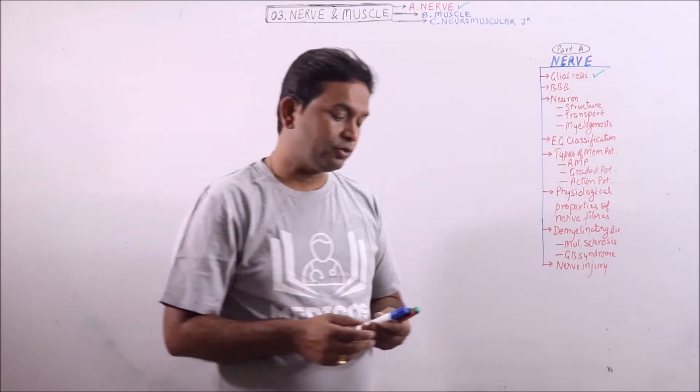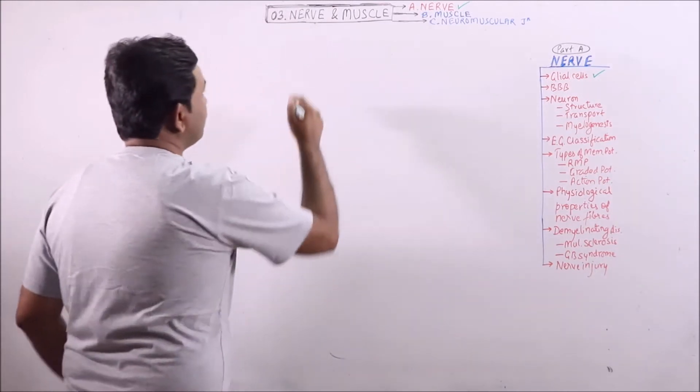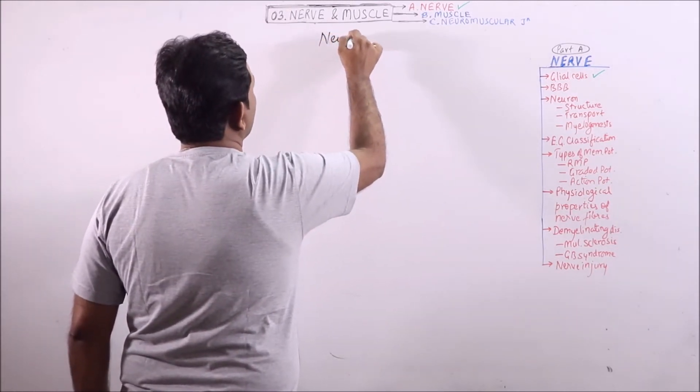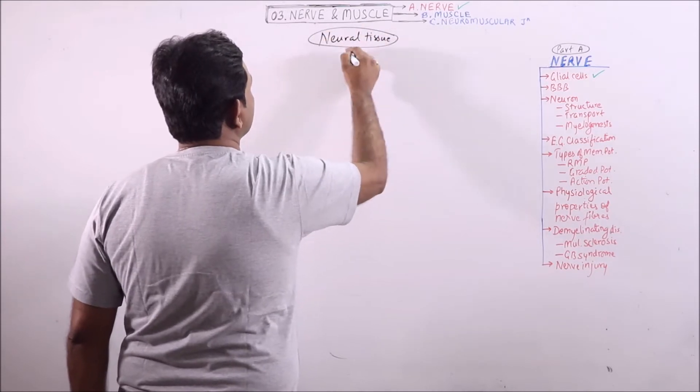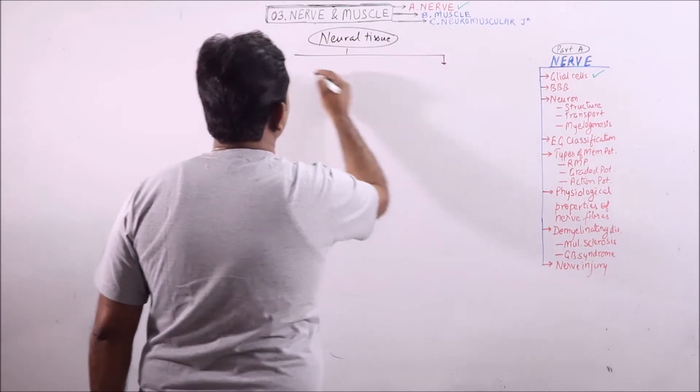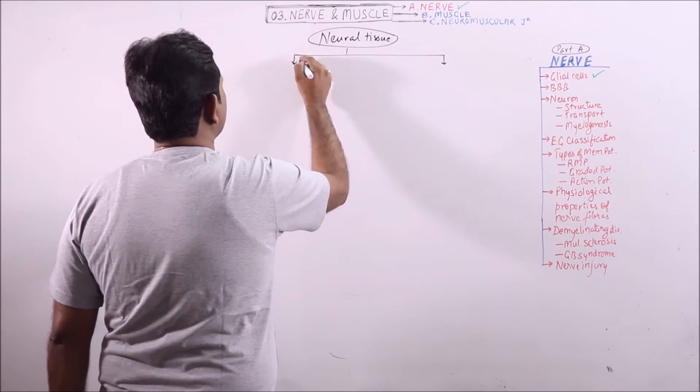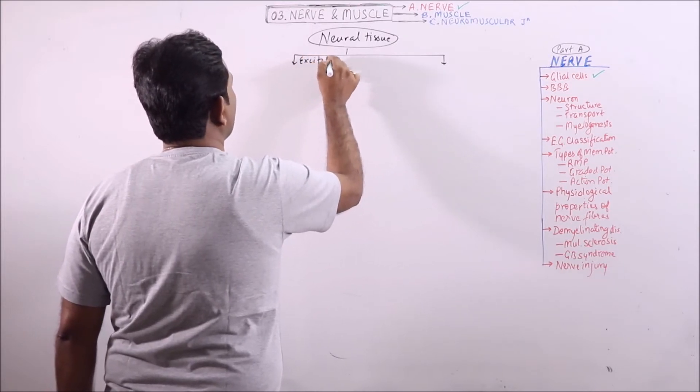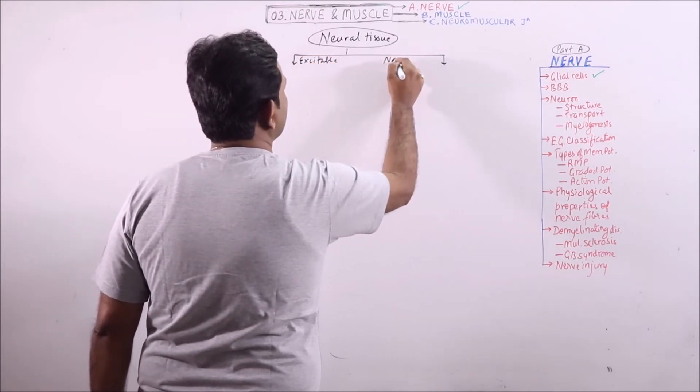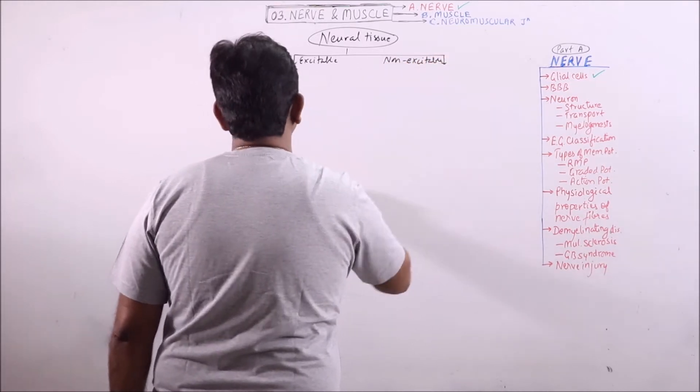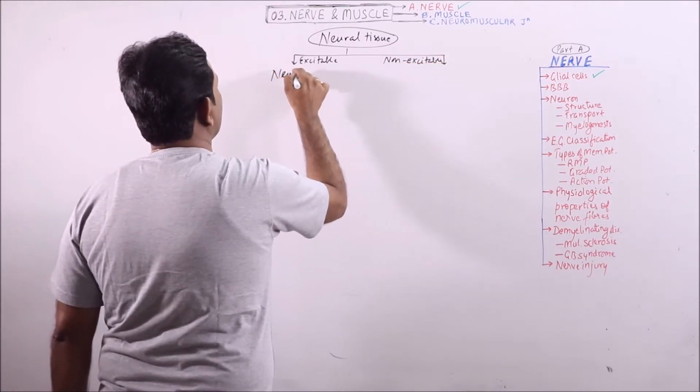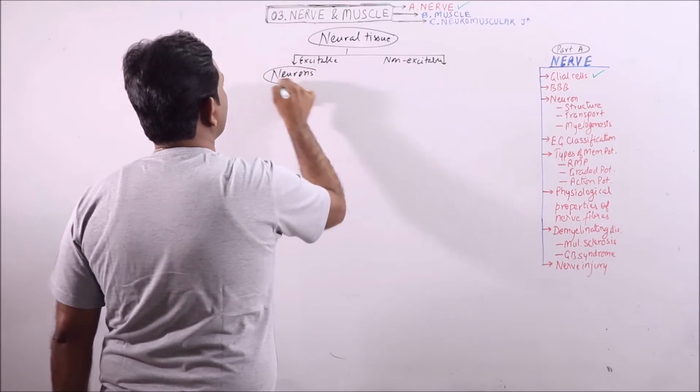Glial cells are part of neural tissue. Now if we draw the outline of neural tissue then we can classify them into excitable and non-excitable cells. Excitable cells include neurons.